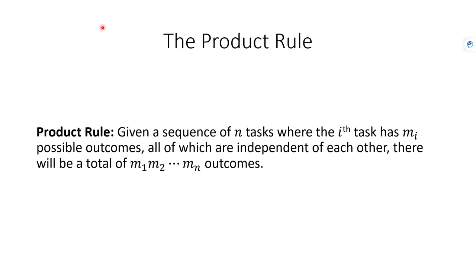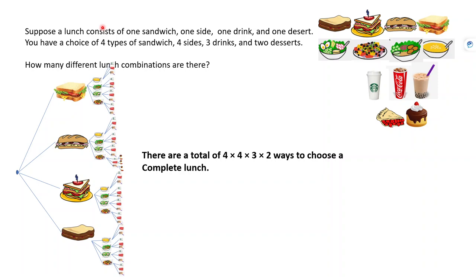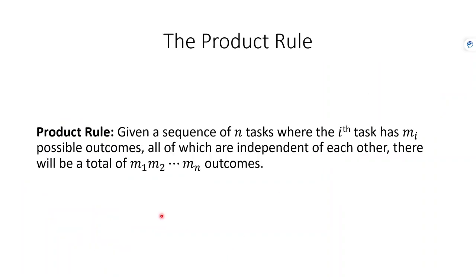The product rule states: given a sequence of n tasks, where the i-th task has M_i possible outcomes, all independent — meaning previous choices don't change the number of outcomes available — the total number of outcomes is the product M_1 times M_2 all the way through M_n. In our lunch example, four tasks had four, four, three, and two outcomes, giving four times four times three times two total outcomes.